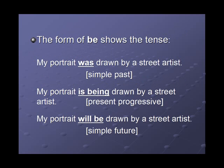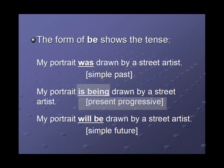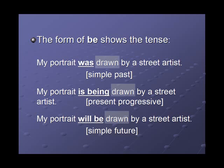It's the form of 'be' that shows us the tense. Look at these three sentences: my portrait was drawn by a street artist; my portrait is being drawn by a street artist; my portrait will be drawn by a street artist. The sentences are the same but the form of 'be' changes. First we have the simple past — 'was'; then the present progressive — 'is being'; and then the simple future — 'will be.' The past participle remains the same.